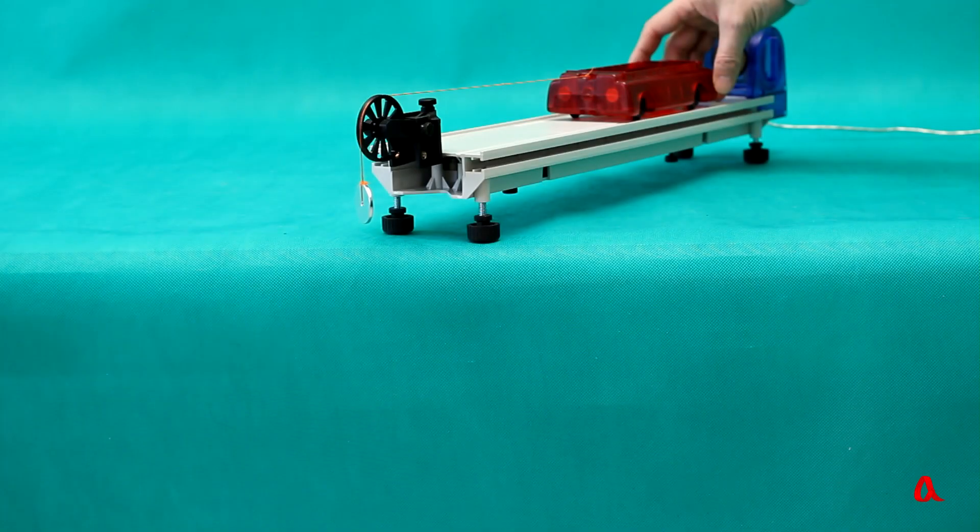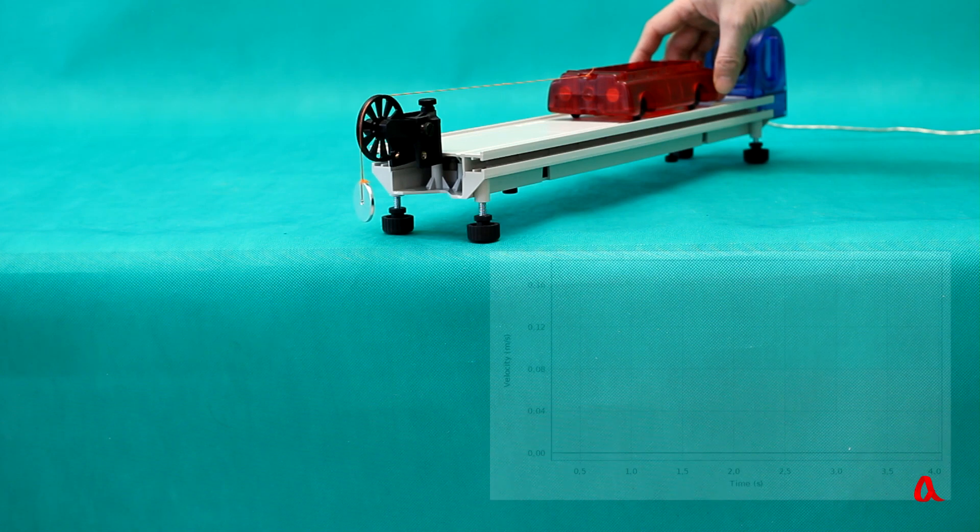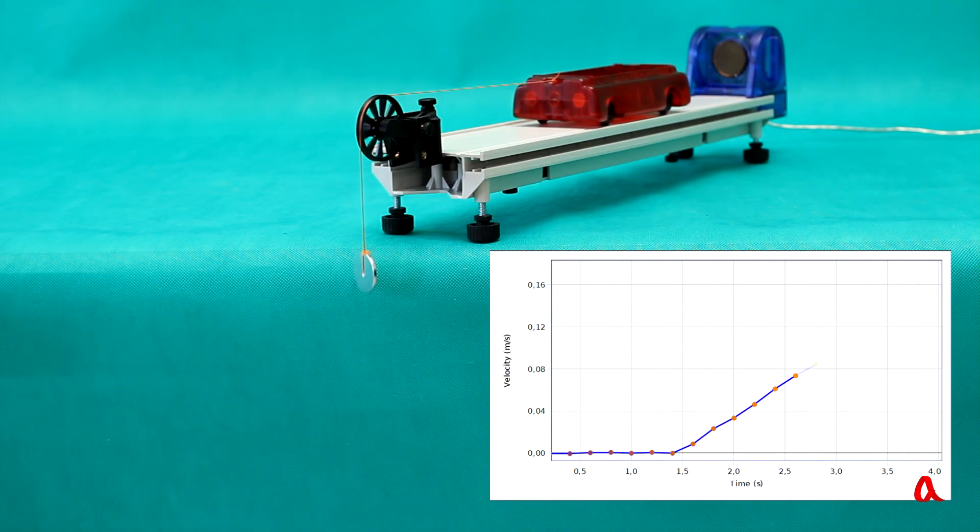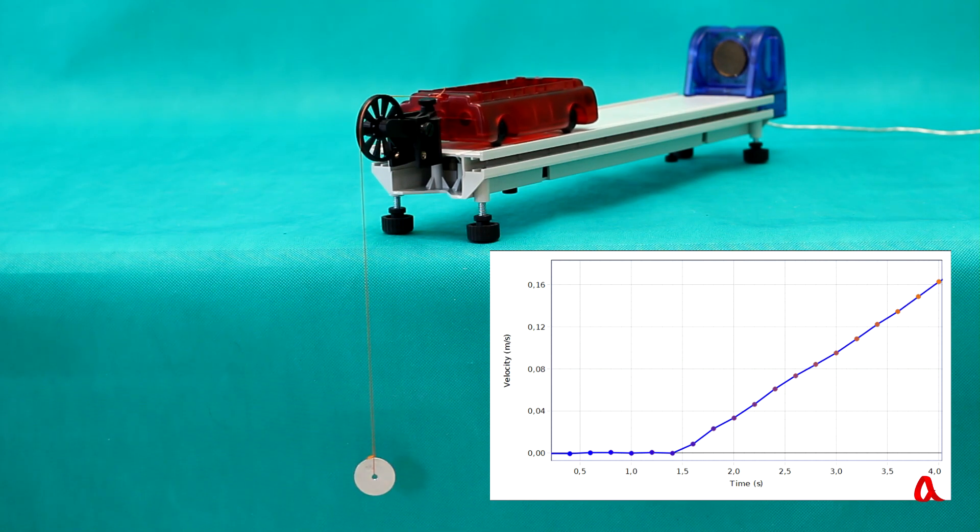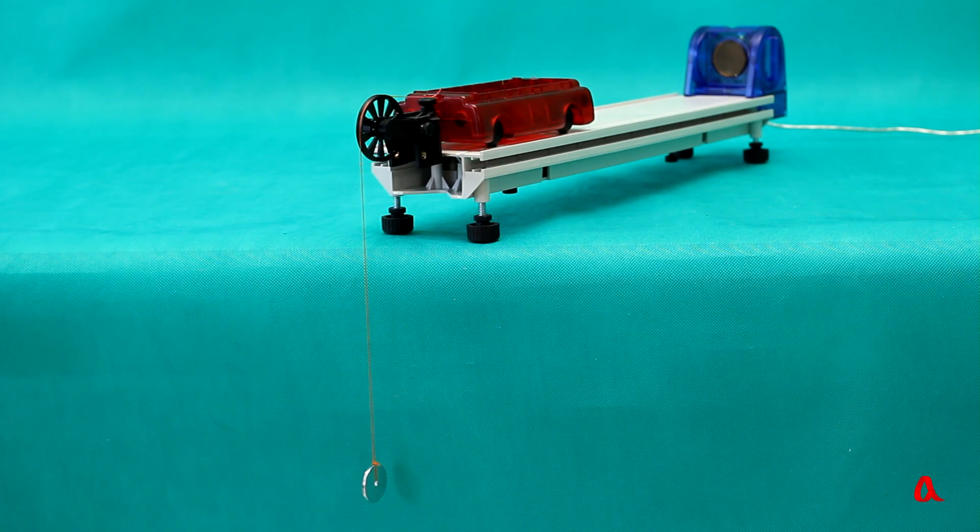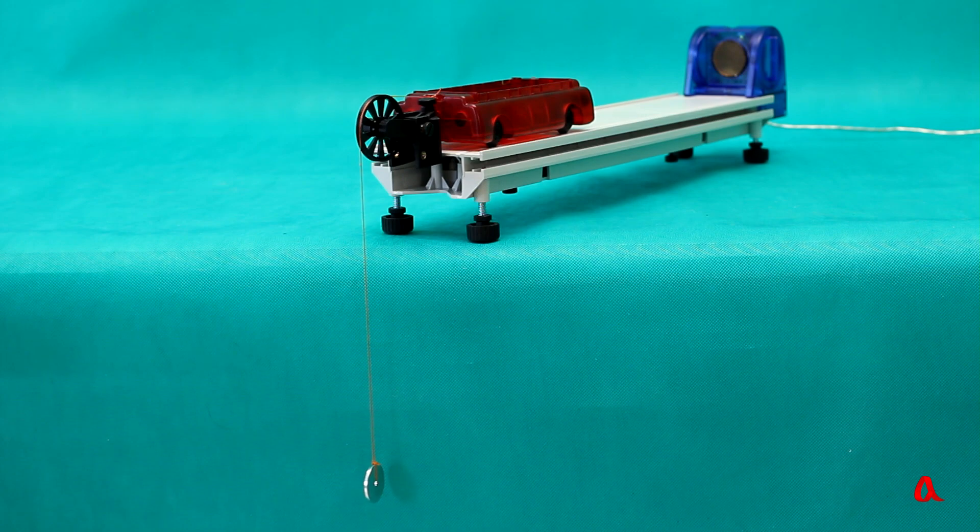In our next experiment, a constant force will affect the trolley. It will be the mass of a small load threaded through a block. The speed of the moving trolley changes evenly, which means that the trolley is moving with constant acceleration.